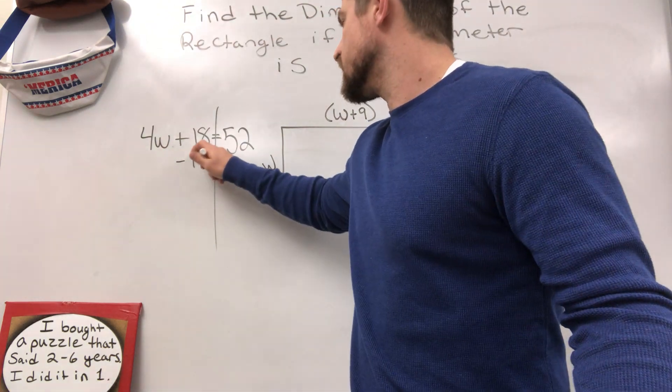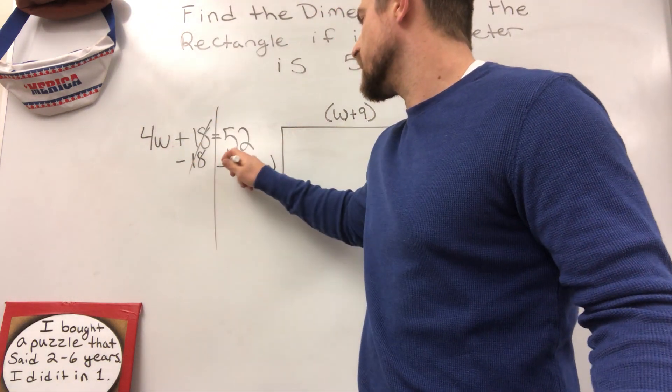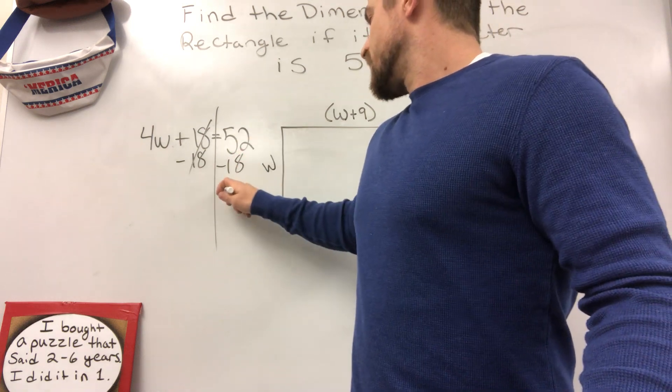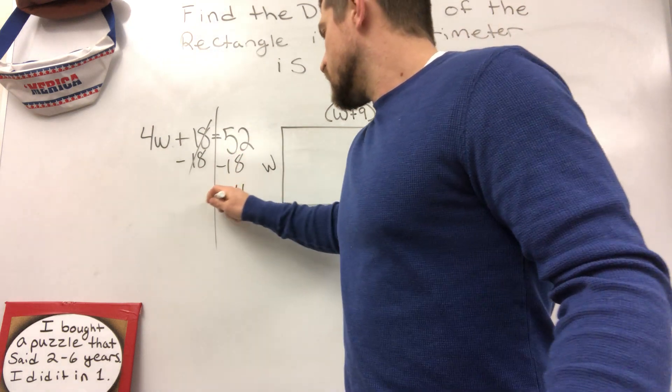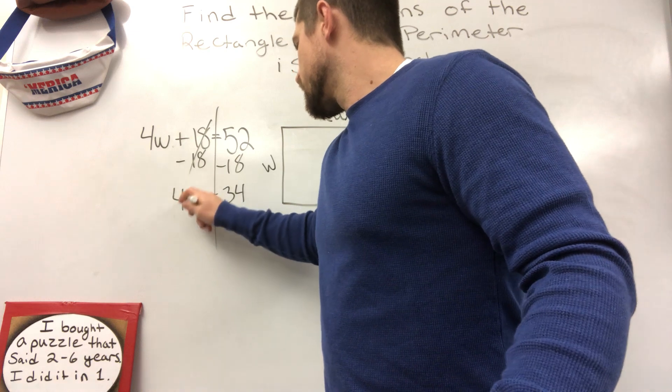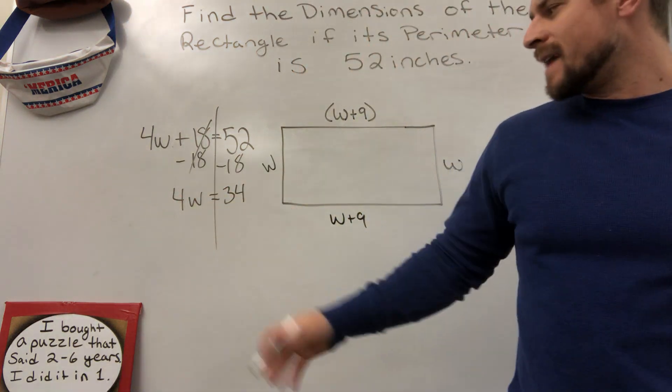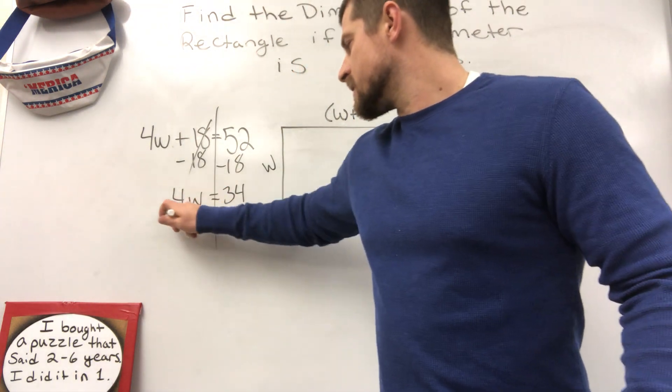Well, take away 18 cancels. Take away 18. 34 equals 4W. Now, we need to divide by 4. Opposite of multiplying is dividing.